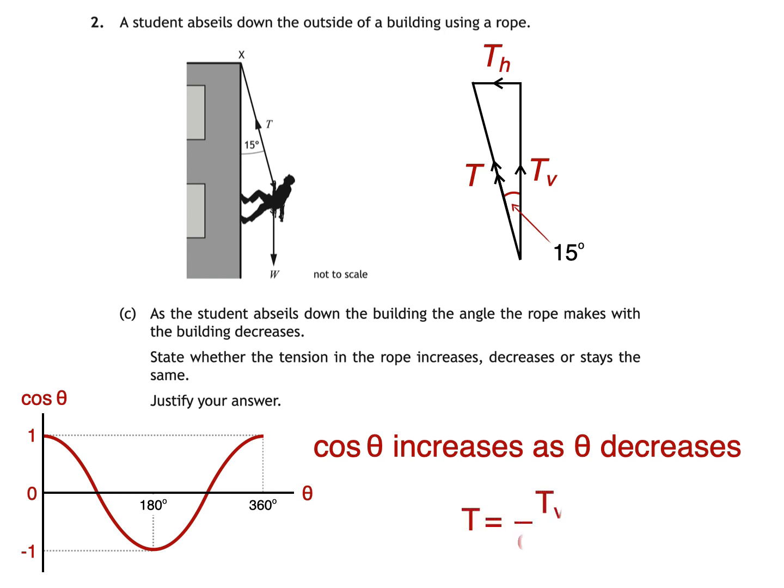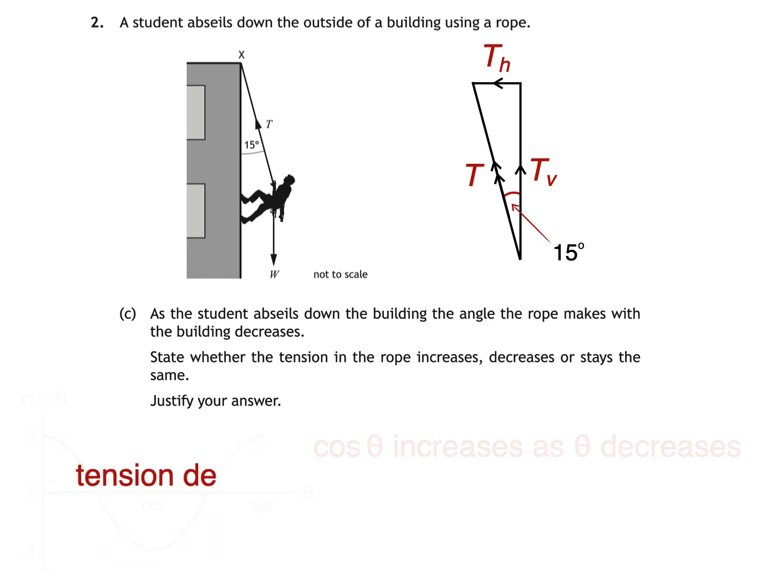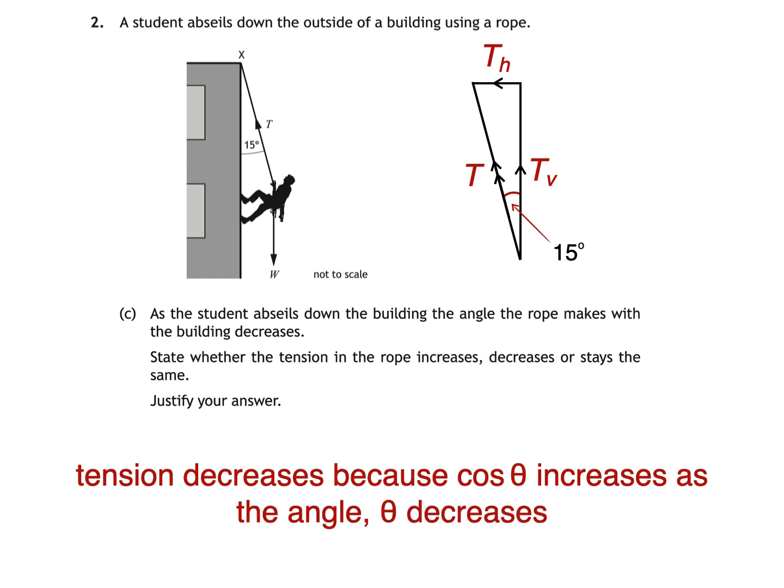Previously we used this equation to calculate the tension force in the rope. So when the angle decreases, cos θ increases, which means that the tension force decreases. We could explain it like so: Tension decreases because cos θ increases as the angle θ decreases. That's not easy to say.